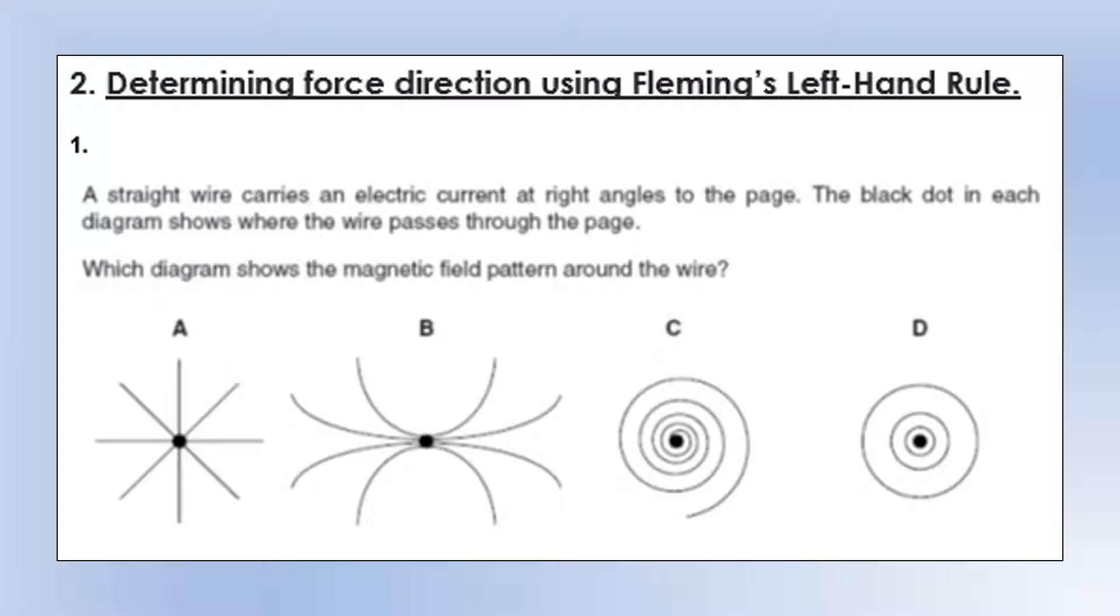Which diagram shows the correct pattern? Around a wire we get what we call concentric circles. The field lines mustn't have a free end, so they must form complete circles. And the further away from the wire you get, the weaker the field gets, and that's clearly shown by option D. A looks like it would be an electric field of some kind, and I have no idea what B and C could be.